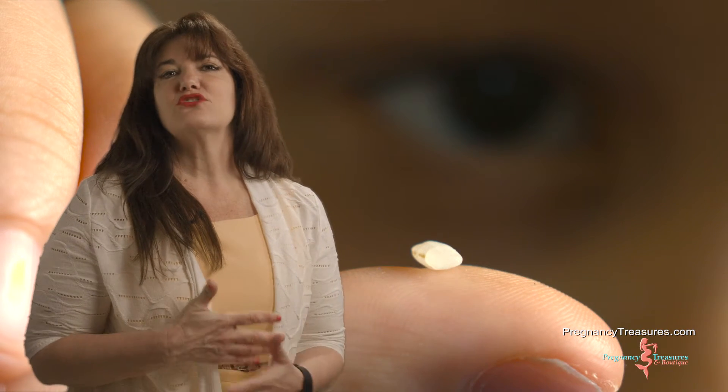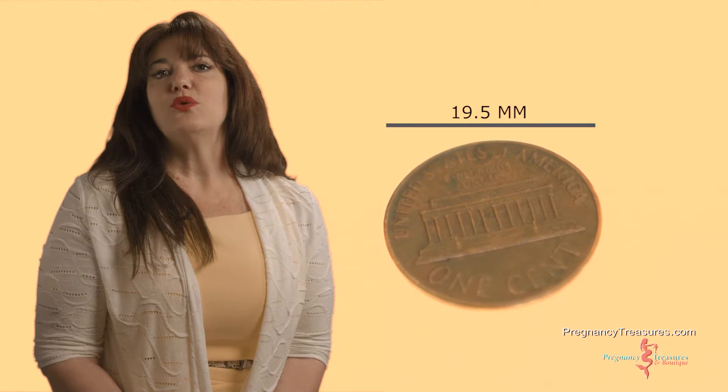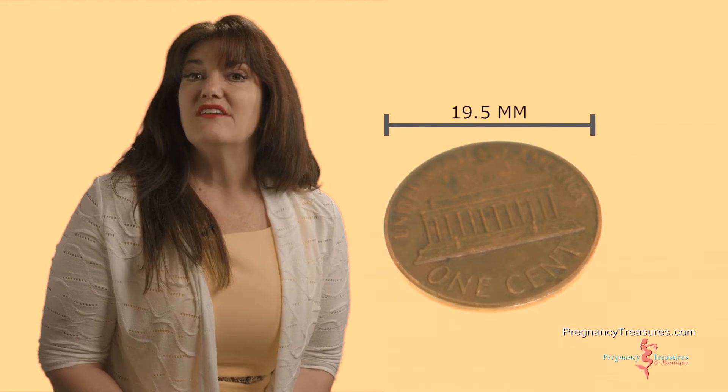The arms and the legs are rapidly developing from now until day 47 when the embryo is measuring 20 millimeters, which is the size of a lima bean.